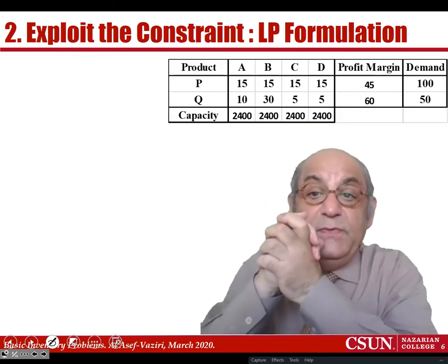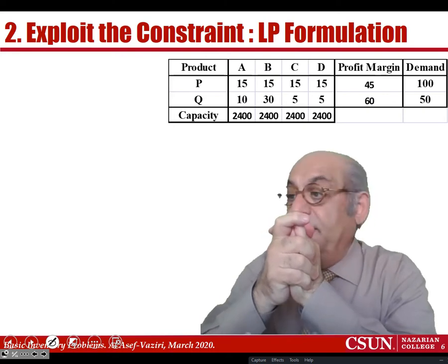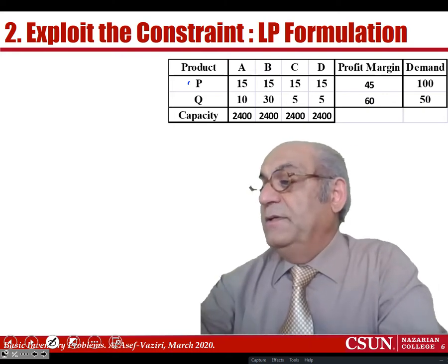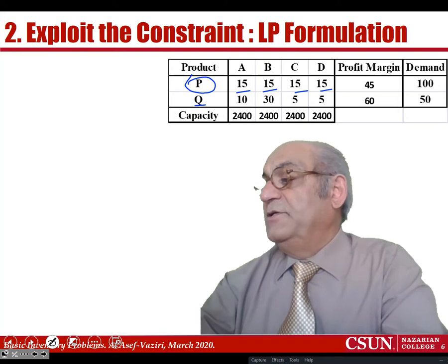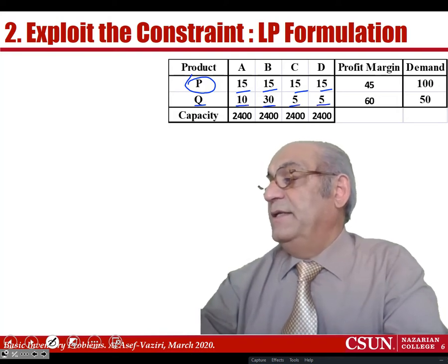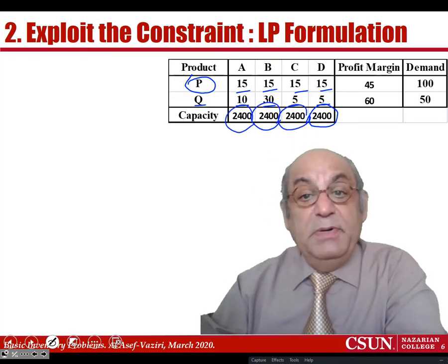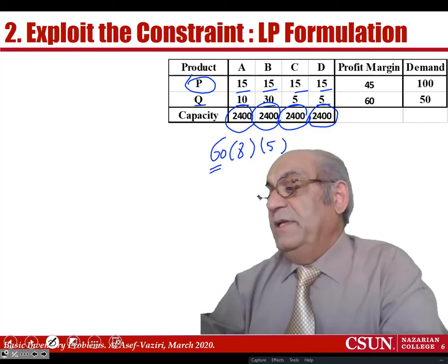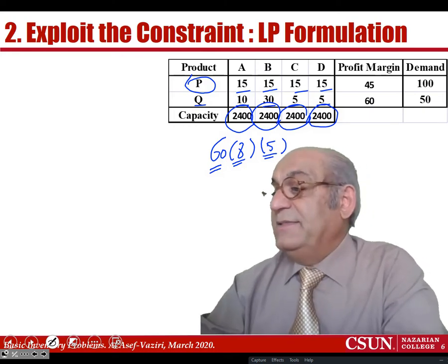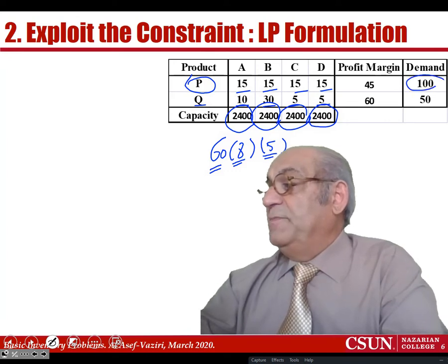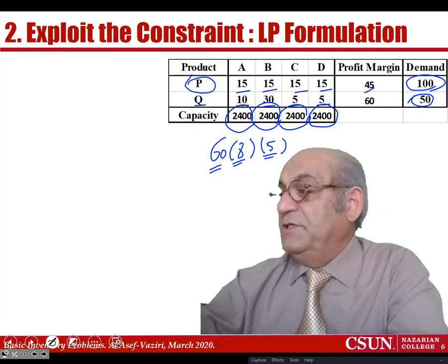Now I am going to develop a linear programming model for this problem. Product P and product Q both go through departments A, B, C, and D. The capacity of all stations is 2,400 minutes per week — that is 60 minutes times 8 hours times 5 days per week. Demand per week for product P is 100, and for product Q is 50. The profit margins are $45 and $60.